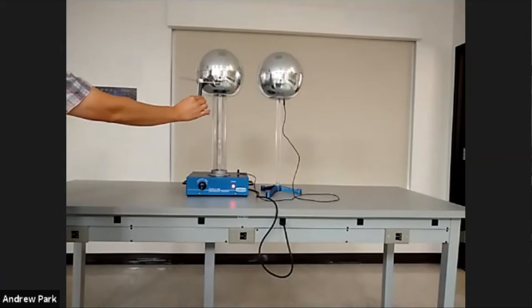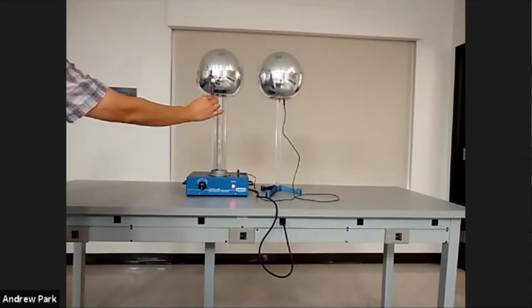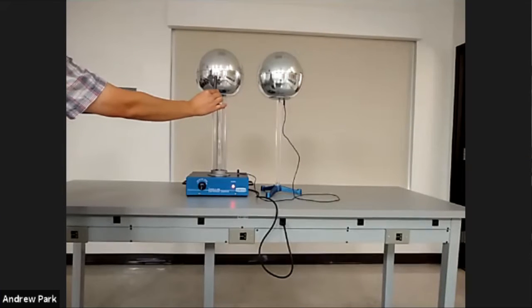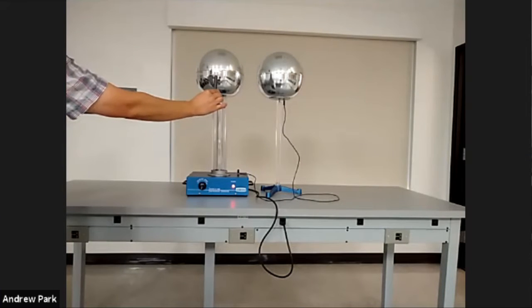Notice how the Van de Graaff generator is no longer discharging to the grounded sphere. What this is illustrating is that the Van de Graaff generator is discharging somehow. The electric charges accumulating on the sphere are finding some way to get off without visibly discharging to that other sphere.